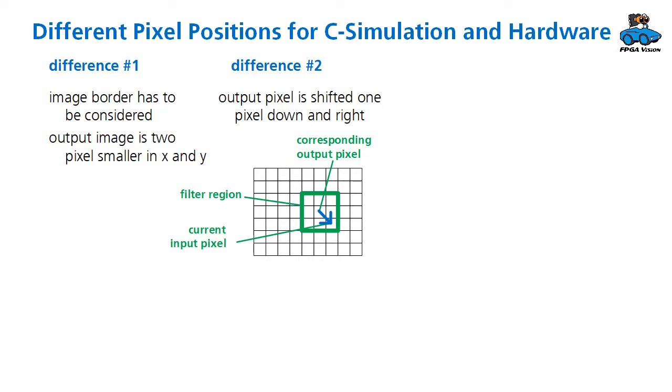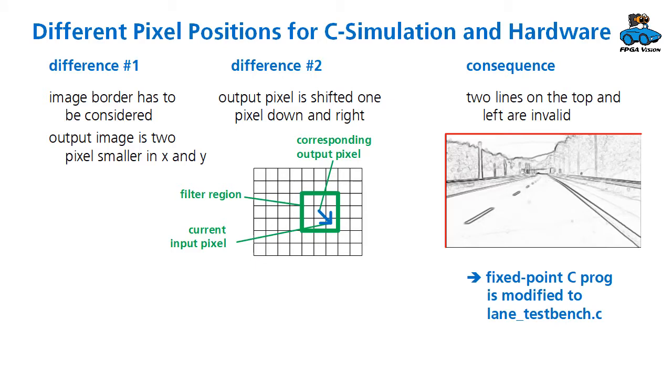the result of the 3x3 matrix corresponds then to the center pixel, which means that there is a shift of one pixel down and one pixel right between the current position and the corresponding output pixel. As a consequence, the bit-true simulation has to consider this shift plus the invalid lines. So in the resulting image, two lines on the top and two lines on the left are invalid. And this is considered by a slightly modified C program,